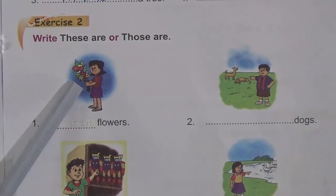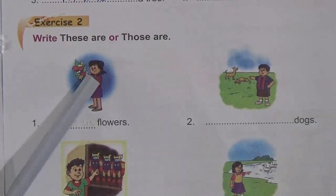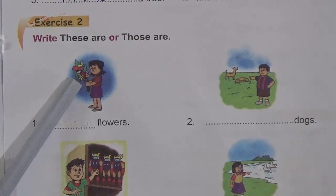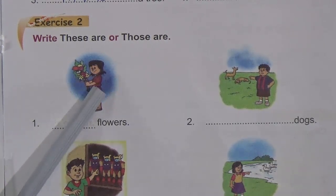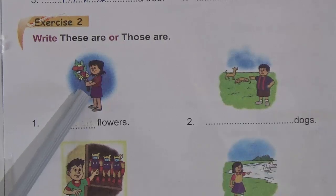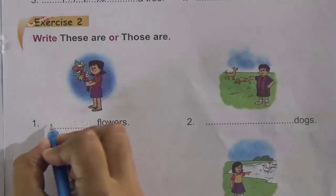Now look at the first picture: number one — blank flowers. There are more than one flower, and the flowers are near the girl — the girl is holding the flowers. So we will write here 'these are'.